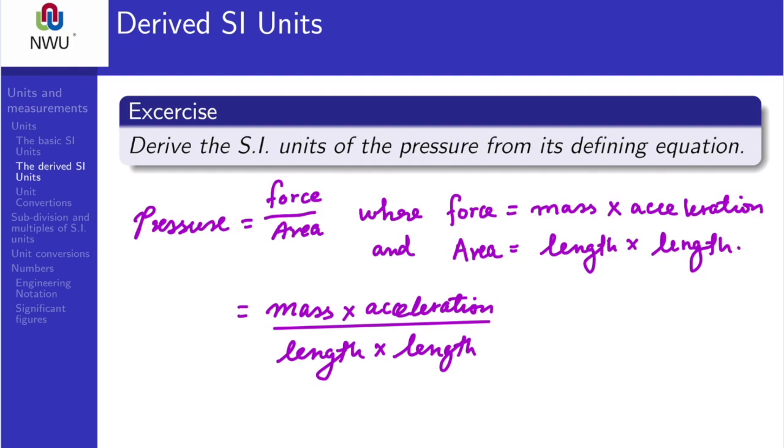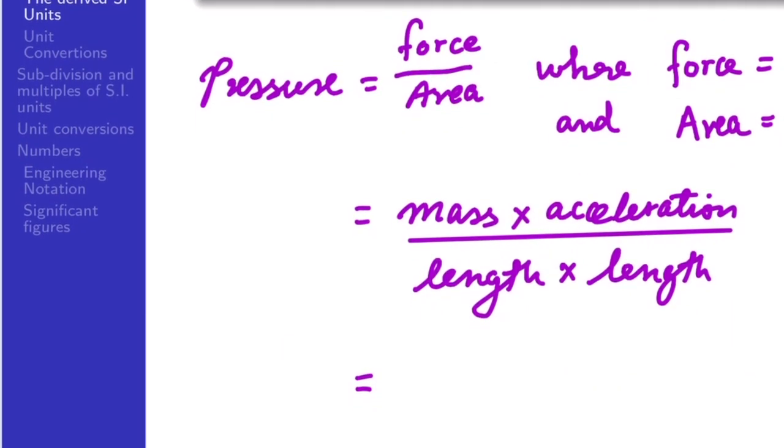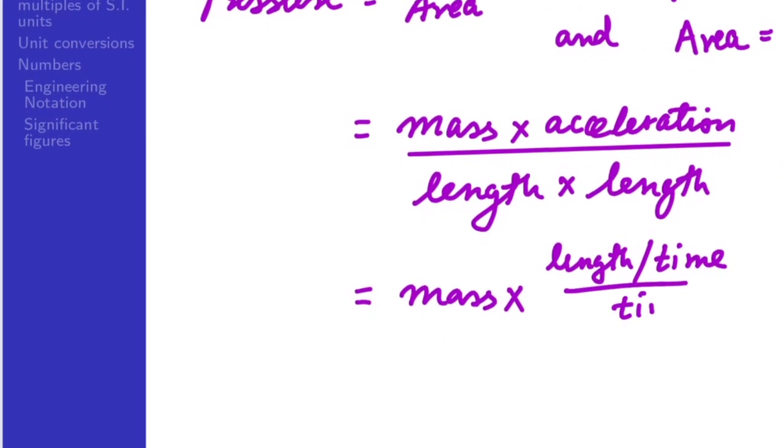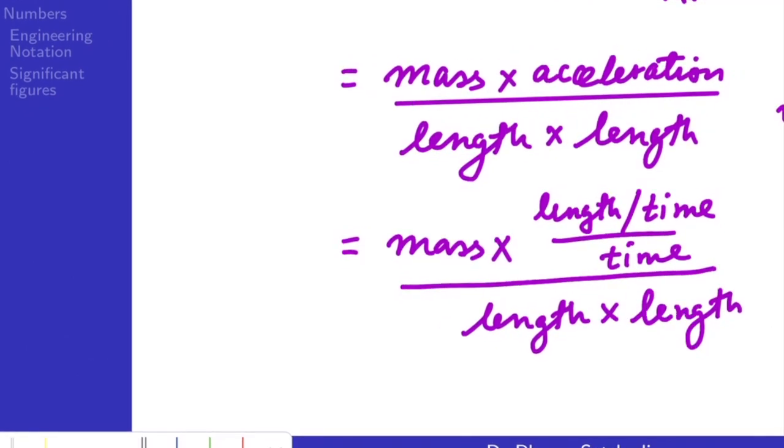Now everything in this equation is in base units or base quantities except acceleration. So let's write acceleration as the velocity over time. We can further express velocity as length over time. And therefore this expression of pressure can then be written as mass times length over time divided by time, everything divided by length squared.